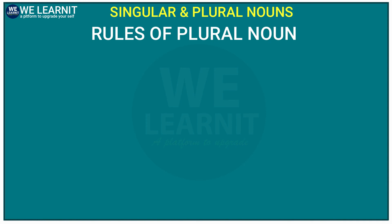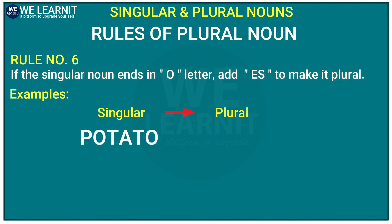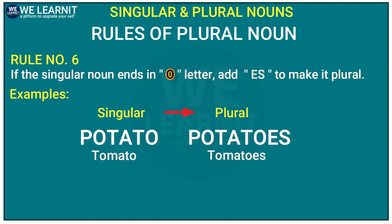Now, let's move to the sixth rule of plural nouns. If the singular noun ends with the letter -o, to make it plural, we need to add -es. For example, 'potato' ends with -o, so as per the sixth rule, we add -es, and 'potato' becomes 'potatoes'. Similarly, 'tomato' becomes 'tomatoes', etc.